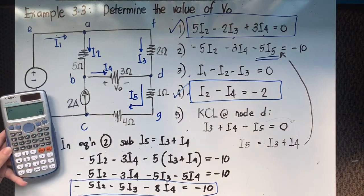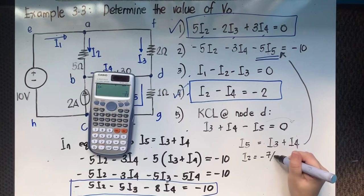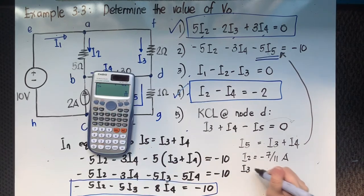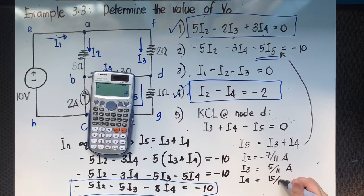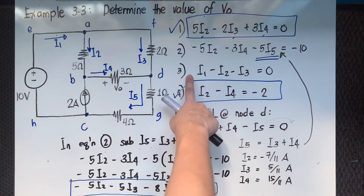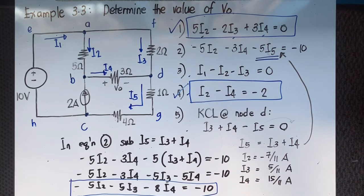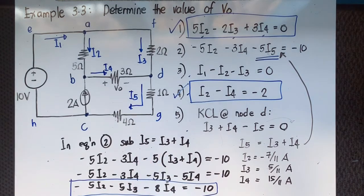The calculator gives us: I2 = -7/11 amperes, I3 = 5/11 amperes, and I4 = 15/11 amperes. Since we have solved for I4, we can now find V sub O, the value asked for in the problem. We can also find I1 and I5 using the remaining equations.